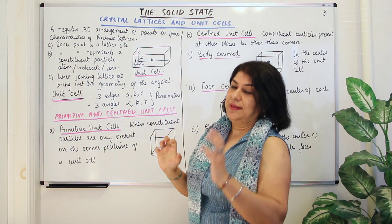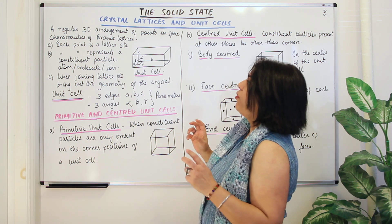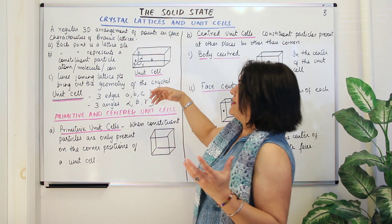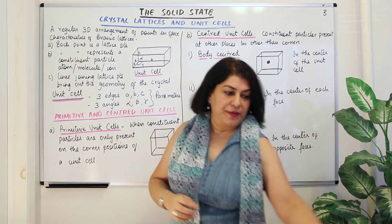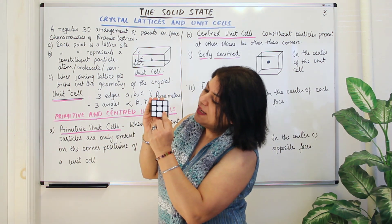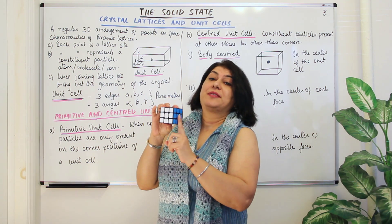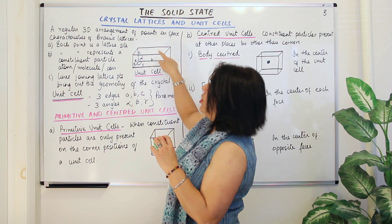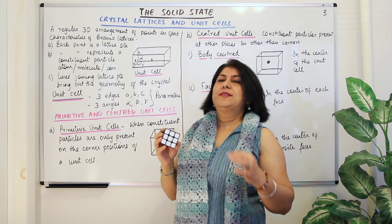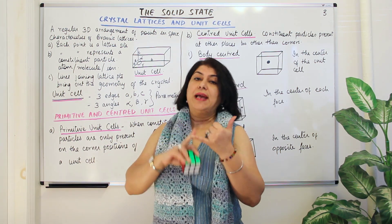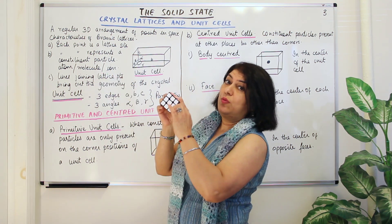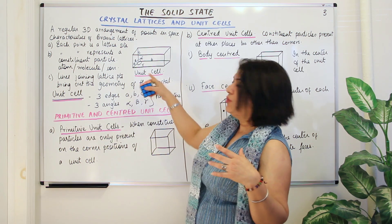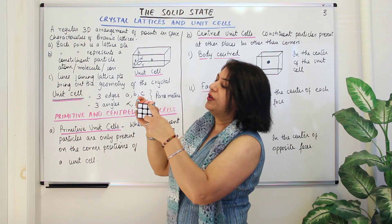A crystal lattice is a regular three-dimensional arrangement of points in space. Each point in the lattice — each corner of each cube — represents an atom. These are called lattice points or lattice sites. Whatever is the constituent particle making the crystal, whether an atom, ion, or molecule, it occupies one corner of the cube. On repeating, these give you first the unit cell and then the lattice.